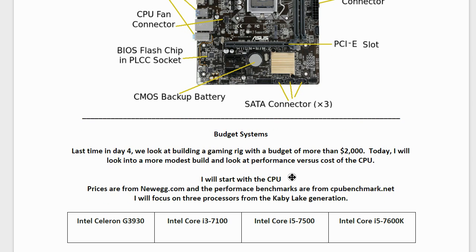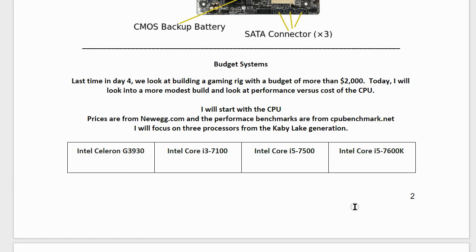Now we move on to budget systems. Last time in day four we looked at building a gaming rig with a budget of more than $2,000. Today we'll look at a more modest build and examine performance versus cost for several CPUs. Prices are from Newegg.com as of February 2017, and performance benchmarks are from CPUBenchmark.net.